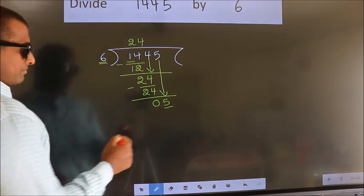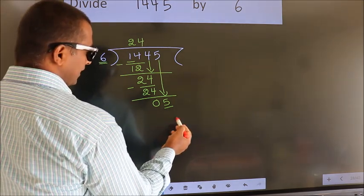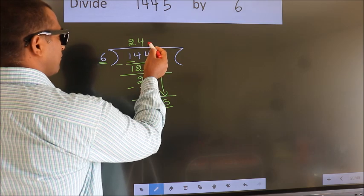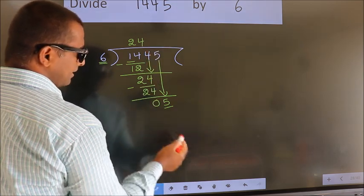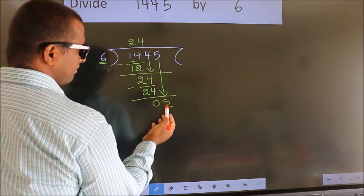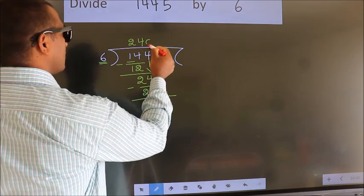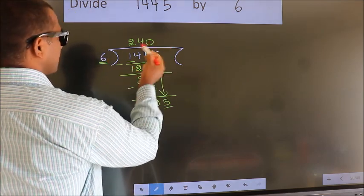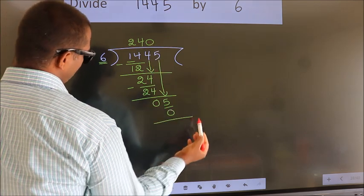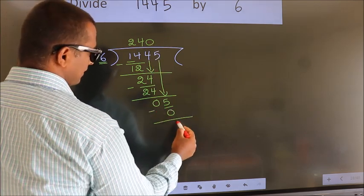Which number should we take here? If I write 1, we get 6, but 6 is larger than 5. So what we do is we take zero here. So 6 into 0 is 0. Now we subtract, we get 5.